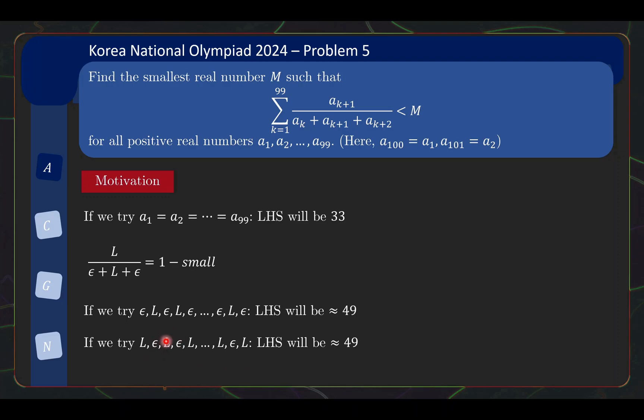For a term like this, where the L is in the middle of two epsilons, we still get the fraction being one minus small. But what we notice is that at the end, this L here is flanked actually by epsilon and another L. So we have L over epsilon plus L plus L, that is about half. Same thing here. This L is flanked by a L and epsilon. So even if we do this scenario where we have more L's than epsilon, the left-hand side is approximately 49. So this suggests that maybe the best we can do is 49, and we show that this is indeed the smallest real number that can bound this. Maybe we cannot do better than 49.